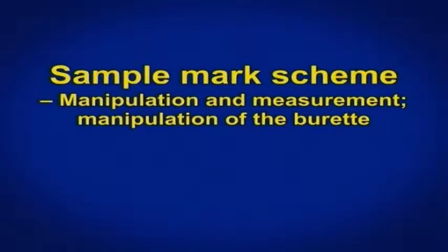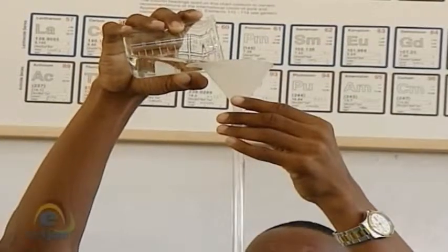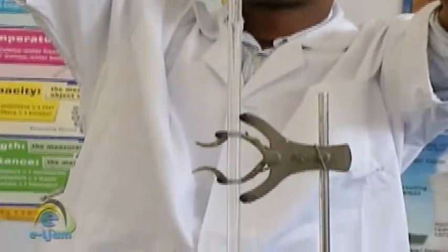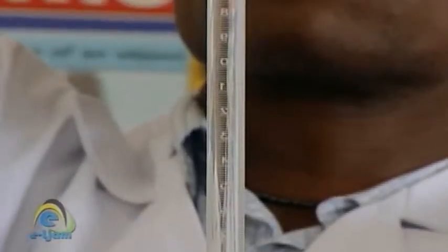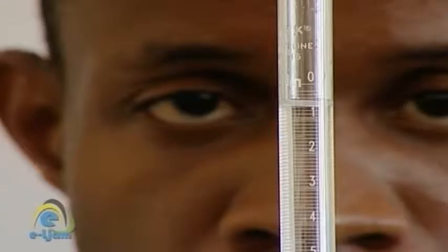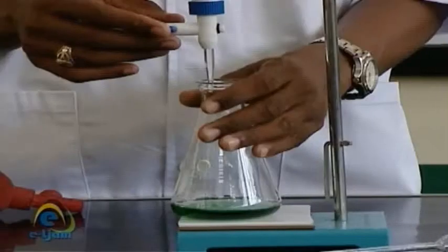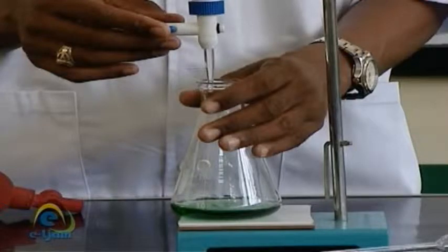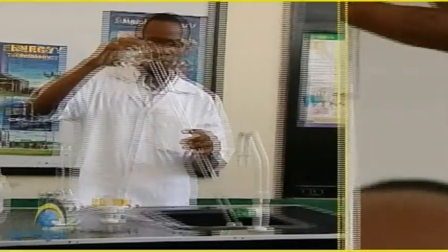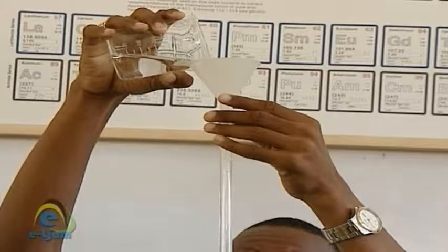For manipulation of the burette, seven marks will be awarded for keeping the burette vertical during filling and reading, ensuring there is a continuous column of liquid from the tip of the burette with no air bubbles, reading taken at eye level to avoid parallax errors, correct manipulation of tap during titration, conditioning of the burette before titration, initial reading not equal to zero, and removal of the funnel before taking initial reading.